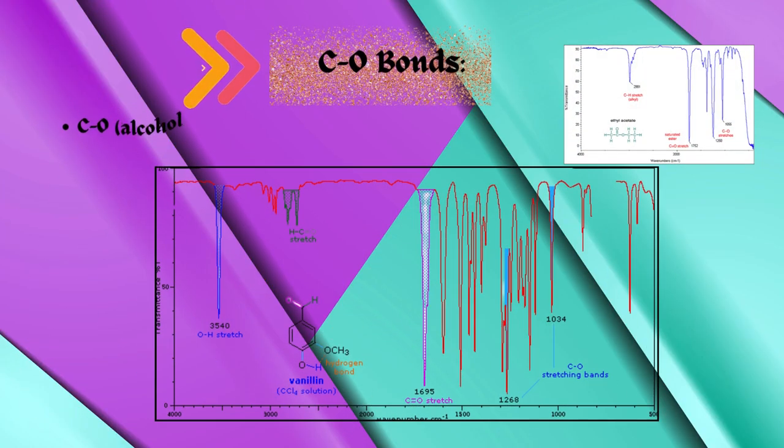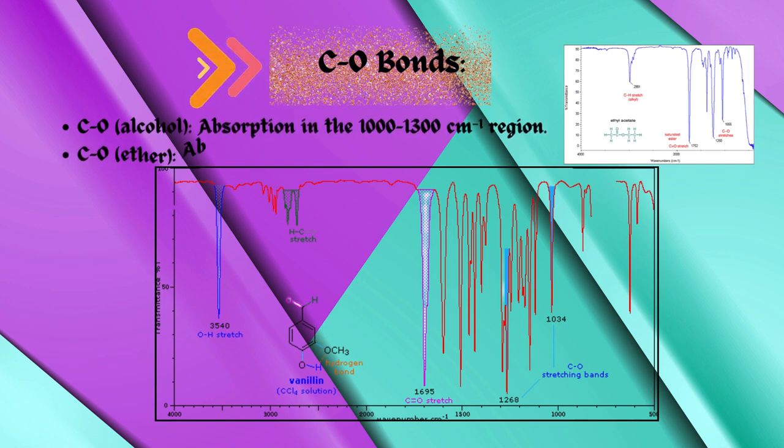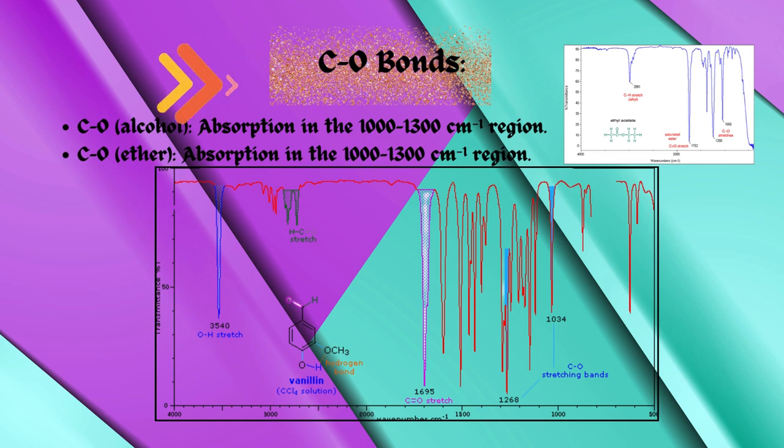Carbon and oxygen CO bonds. CO in alcohol: absorption in the 1,000 to 1,300 per centimeter region. CO in ether: absorption in the 1,000 to 1,300 per centimeter region.